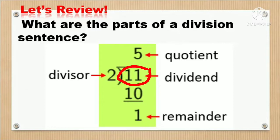We have the dividend, the divisor, the answer is what we call the quotient, and we also have the remainder.